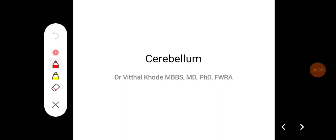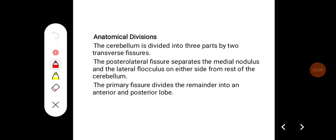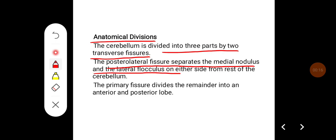In this class we will learn about cerebellum. The anatomical divisions of cerebellum: the cerebellum is divided into three parts by two transverse fissures. The posterolateral fissure separates the medial nodulus and the lateral flocculus on either side from the rest of the cerebellum. The primary fissure divides the remainder into an anterior and posterior lobe.